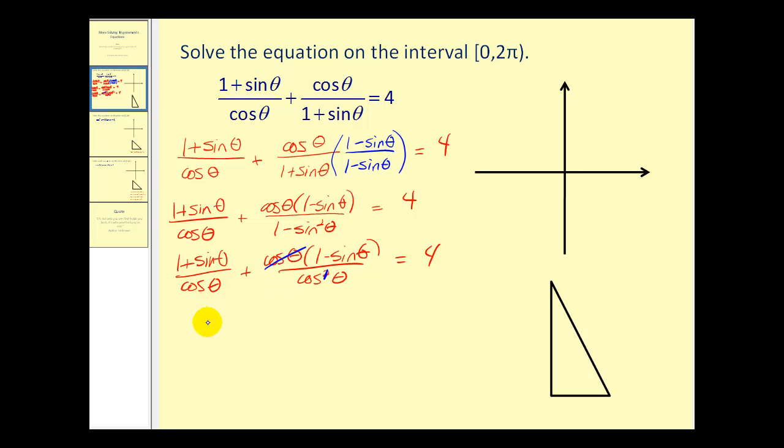Our denominator will be cosine theta. And the numerator will have one plus one, that would be two. And notice our sine theta is also simplified out. We have sine theta plus a negative sine theta, that would be zero. So we have two over cosine theta equals four.